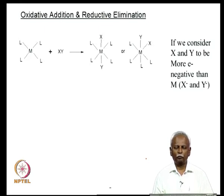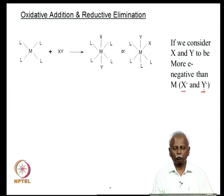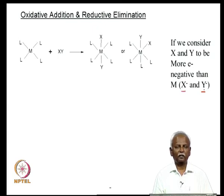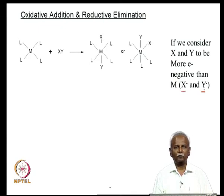If we consider the metal to be less electronegative than X or Y, then using the ionic method, X becomes X minus and Y becomes Y minus. You now have 2 more negative ligands than what you started with. The metal must have released 2 electrons to X and Y, so X became X minus and Y became Y minus, giving you an oxidation state change of plus 2 relative to your starting point.